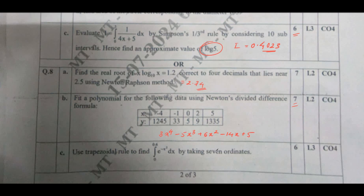Using the trapezoidal rule — I have also solved Simpson's 1/3 rule, 3/8 rule, trapezoidal rule, and Weddle's rule, all taking 7 ordinates. If you solve this, you get the solution as 0.5352. That carries 6 marks.